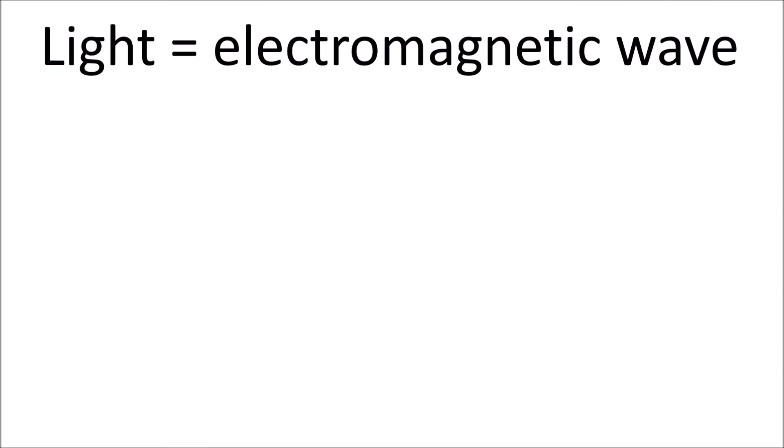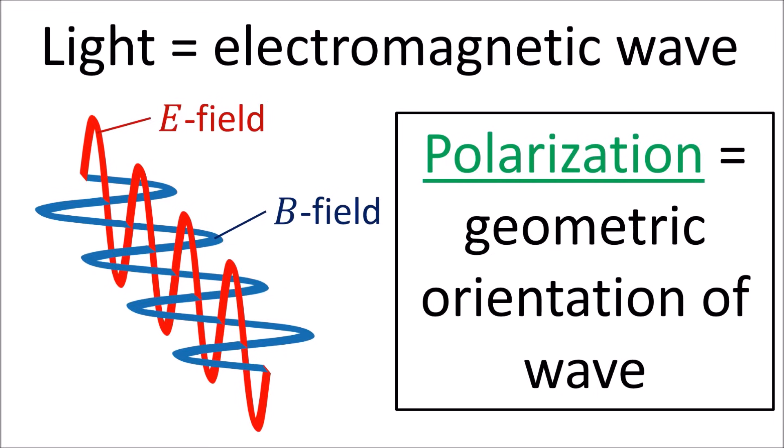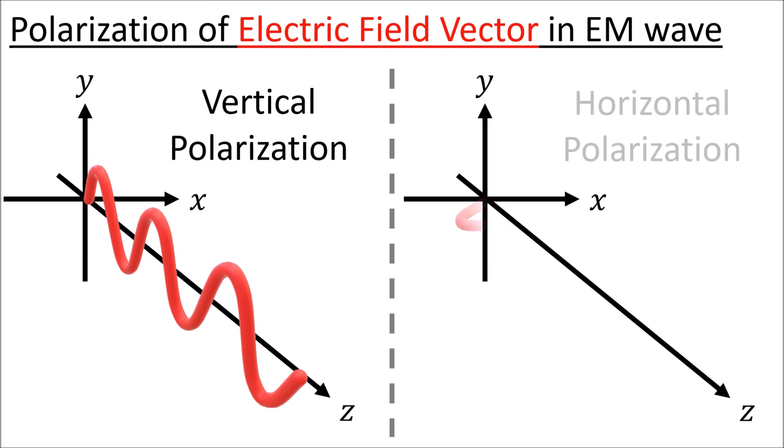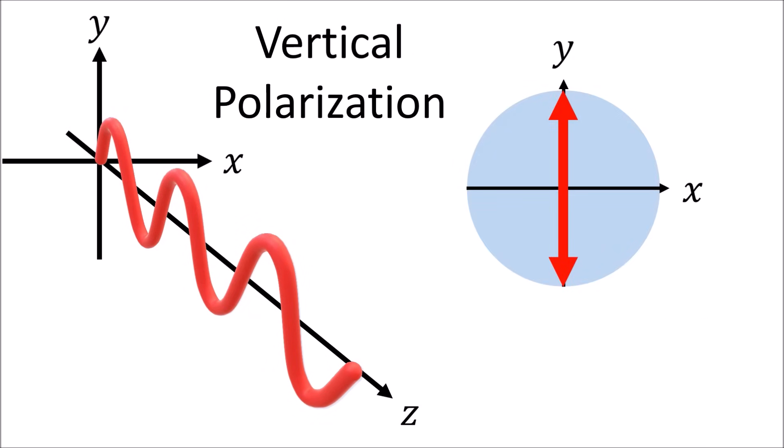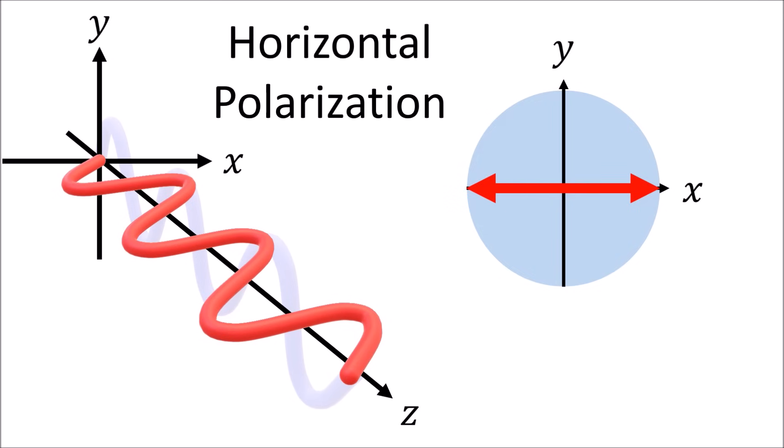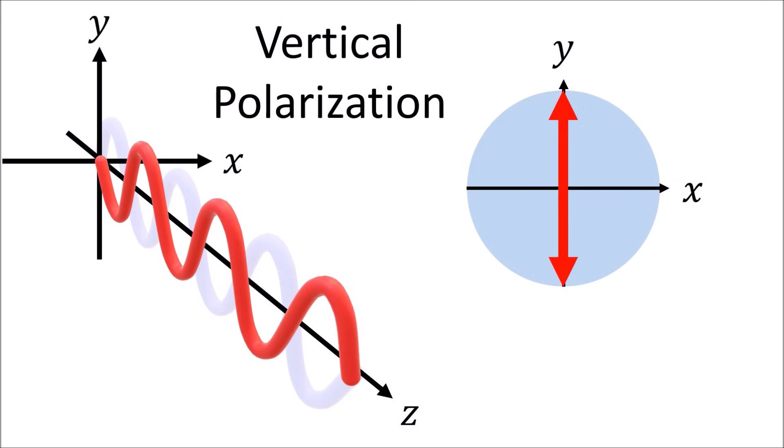Another example of spinors comes from classical physics, where light is described as a wave. The orientation of this wave is called its polarization. Two basic types of polarization are vertical polarization and horizontal polarization. If we take a vertically polarized wave and rotate it 90 degrees, it becomes horizontally polarized. After another 90 degree rotation, it becomes vertically polarized again, although with its phase shifted by half a cycle.